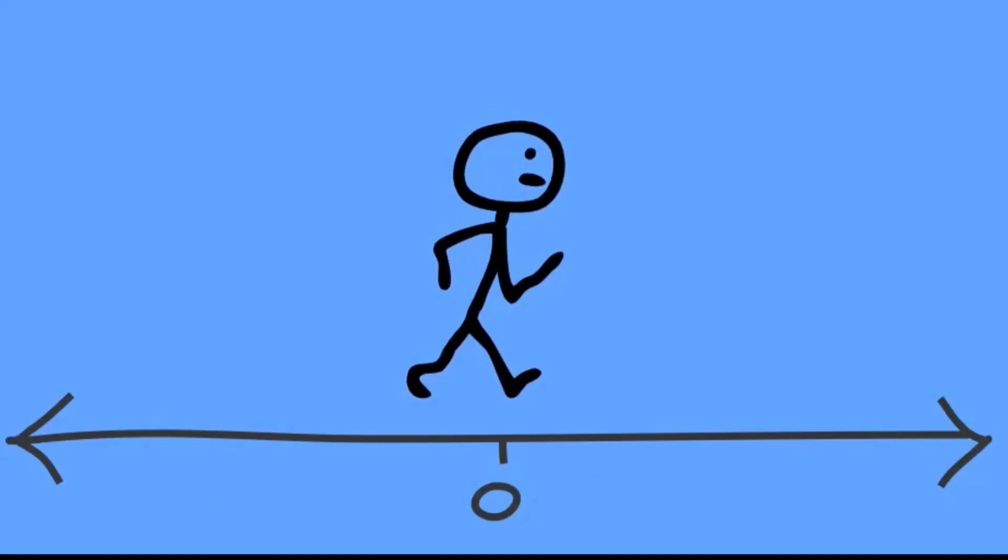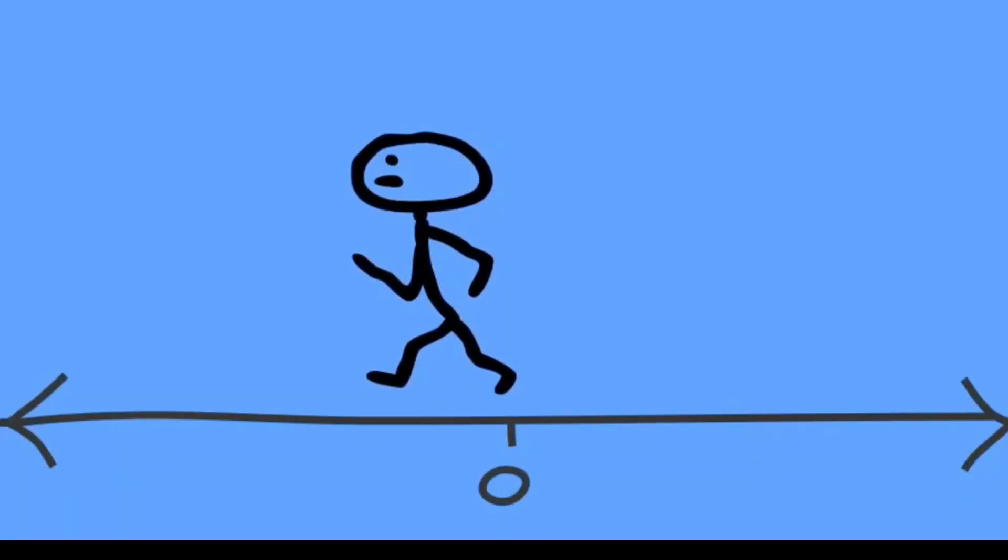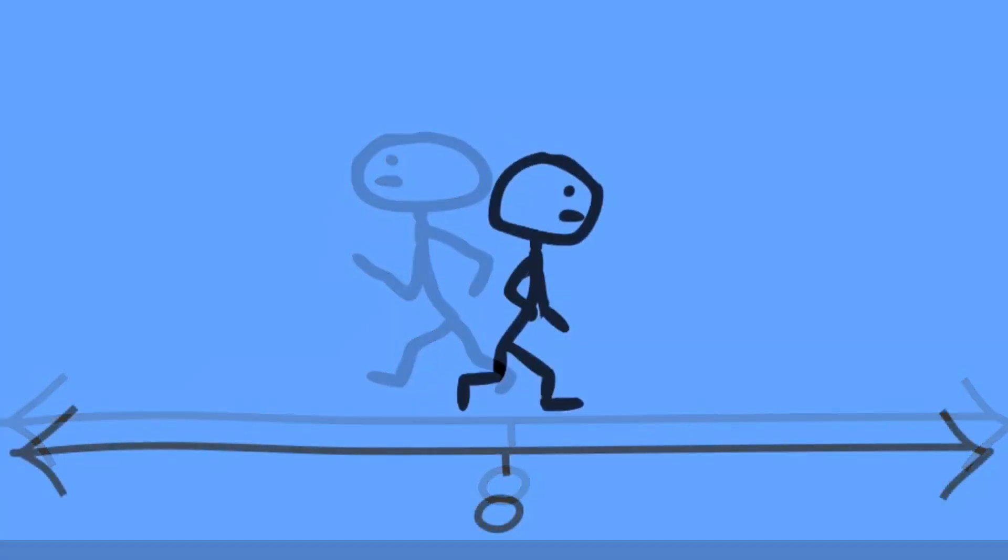To help understand why a negative multiplied by a negative equals a positive, we can use the example of moving right or left on a number line. In this example, let's consider a person walking along the number line.